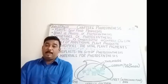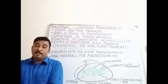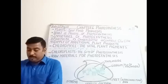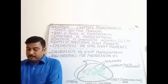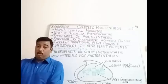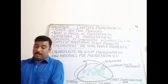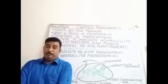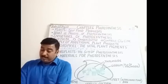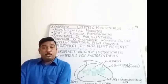Chloroplasts are also found in the guard cells of the stomata. It is estimated that there are about five lakh chloroplasts per square millimeter of leaf surface — if you start to count on a leaf surface, you may find approximately five lakh chloroplasts per square millimeter.